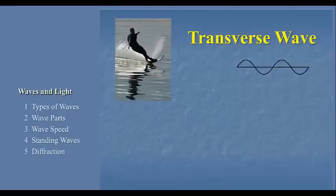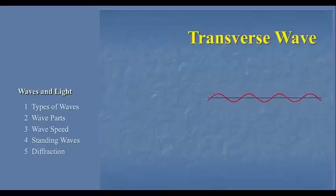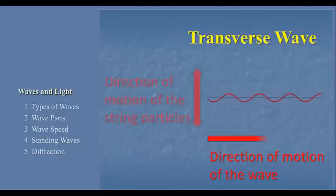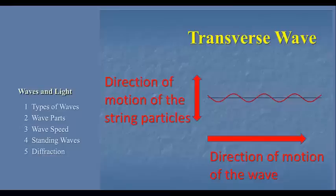To illustrate, let's consider a wave generated by wiggling a horizontal string up and down. In this representation, the black line represents the string at rest. The red line represents what happens when I wiggle the string up and down. Note that the particles of the string simply move up and down, but the wave itself moves from the left to the right.